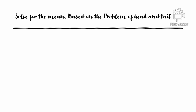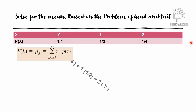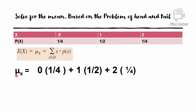Solve for the mean based on the problem of heads and tails. The given values are x = 0 with probability 1/4, x = 1 with probability 1/2, and x = 2 with probability 1/4. Using the formula, the expected value equals 0×(1/4) + 1×(1/2) + 2×(1/4) = 1.